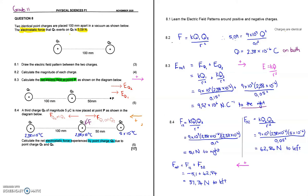In this video we are going to be looking at the November 2020 Grade 11 Physics paper, paper 1, question 8. Two identical point charges are placed 100 mm apart in a vacuum. The electrostatic force that Q1 exerts on Q2 is 5.09 newtons. Remember, the force that Q2 exerts on Q1 will also be 5.09 newtons, but it will be in the opposite direction.